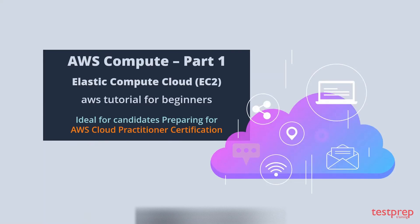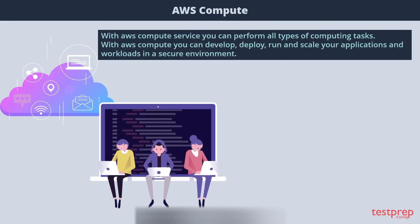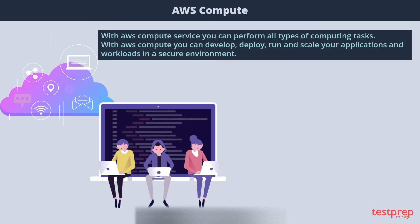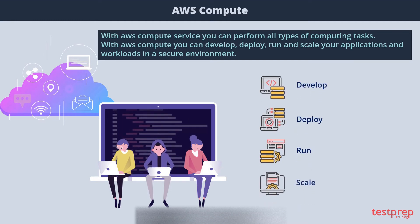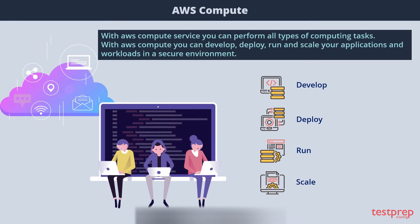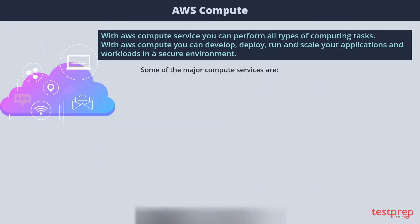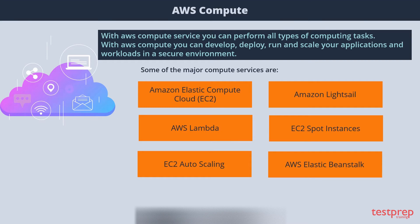Next topic: AWS Compute and Amazon Elastic Compute Cloud. With AWS Compute service, you can perform all types of computing tasks. You can develop, deploy, run, and scale your applications and workloads in a secure environment. Some of the major service offerings under AWS Compute are Amazon Elastic Compute Cloud, Amazon Lightsail, AWS Lambda, EC2 Spot Instances, EC2 Auto Scaling, and AWS Elastic Beanstalk.